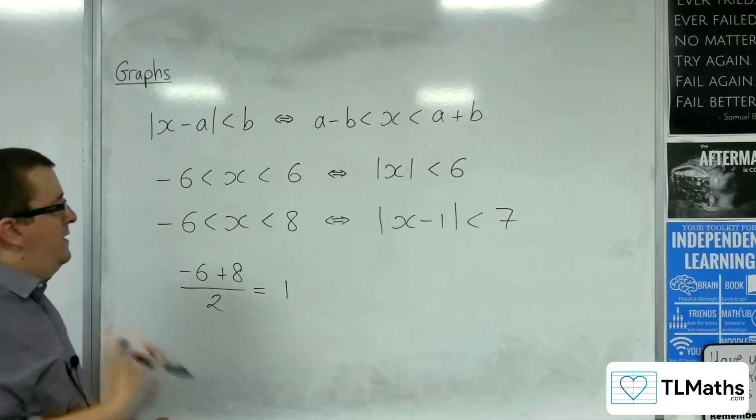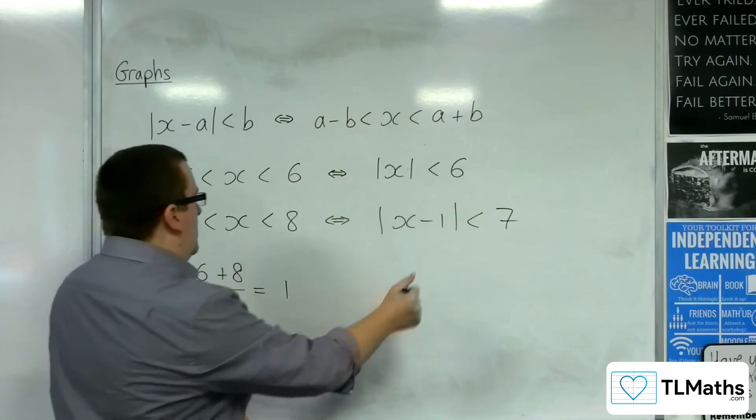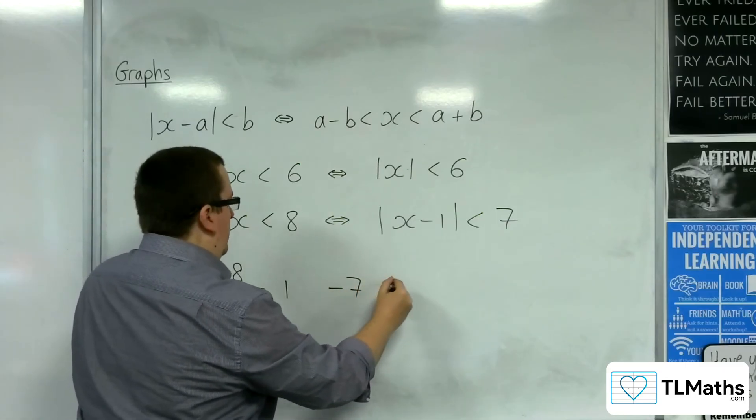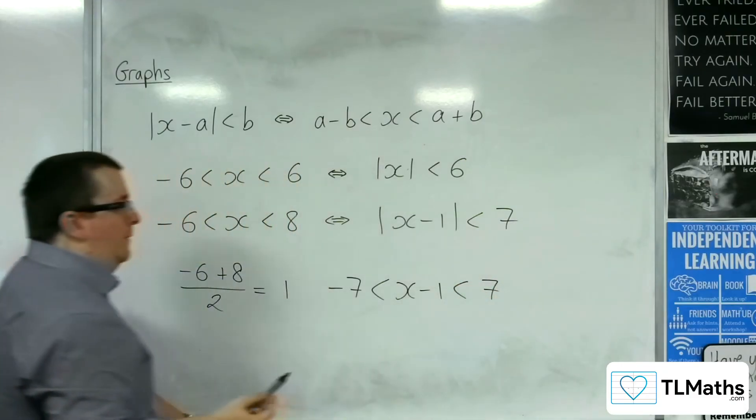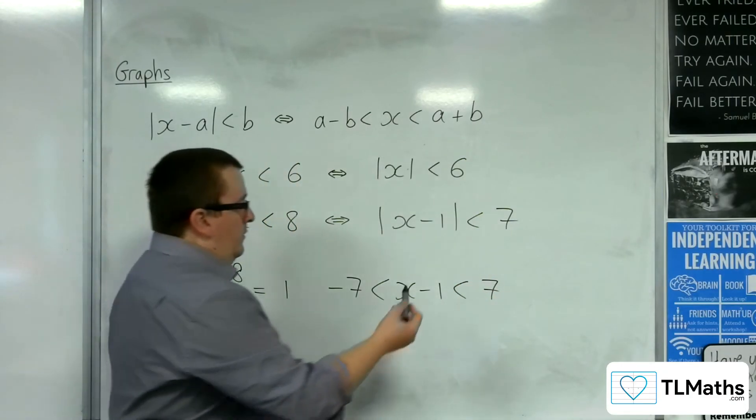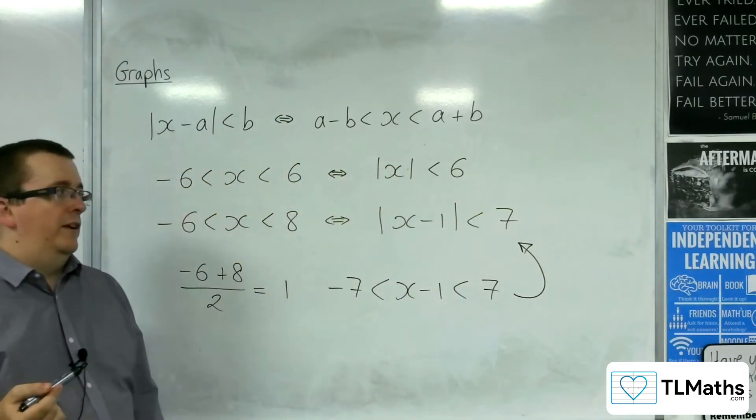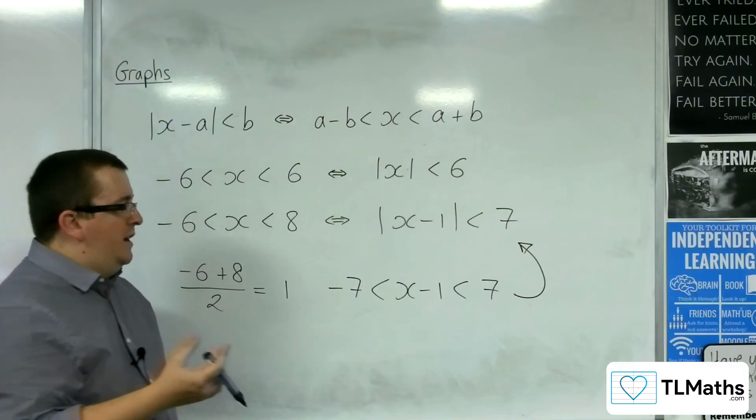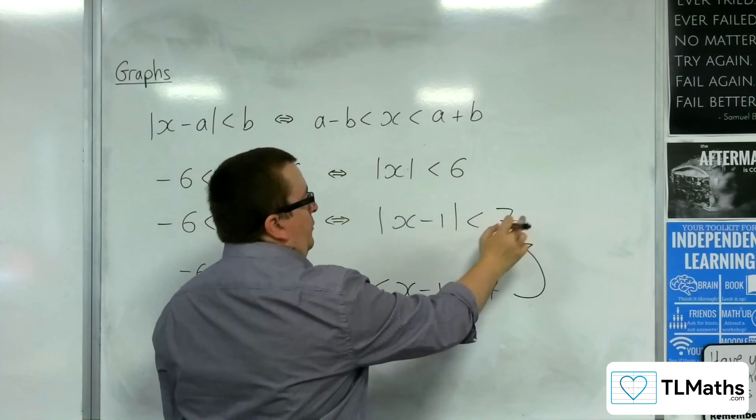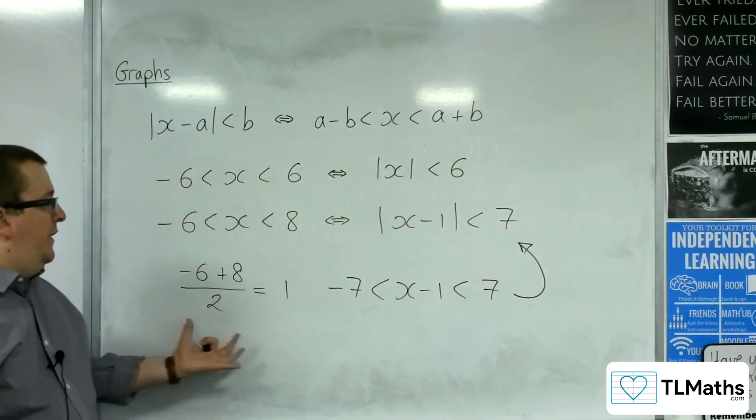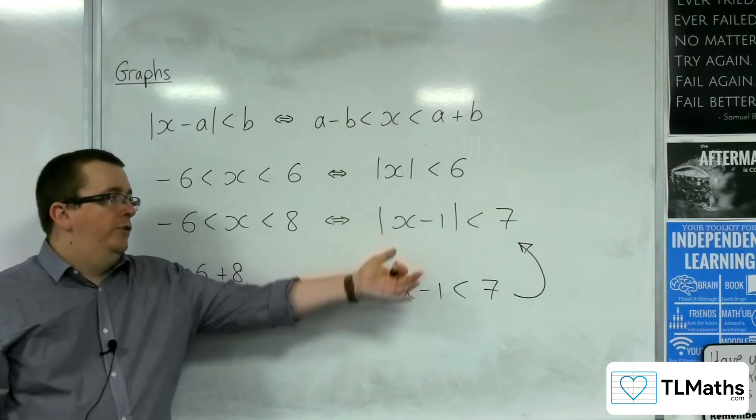So if I then subtract 1 from all three elements, I get minus 7 is less than x minus 1 is less than 7. Which then, from that, gets me straight to this line here and that solution. Because I know that the x minus 1 is between minus 7 and 7, which means the modulus of x minus 1 is less than 7. So you can use this technique in order to go straight to that format.